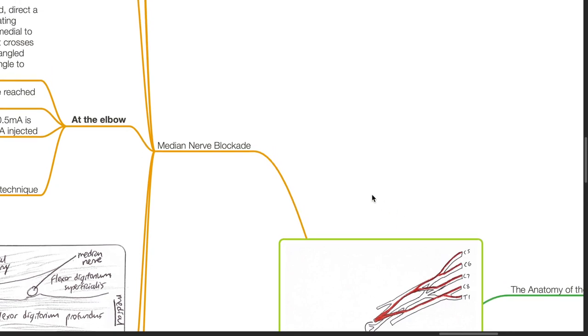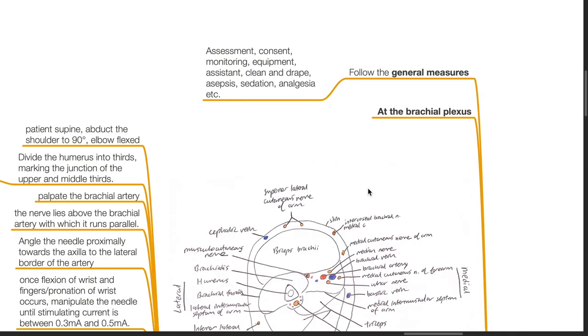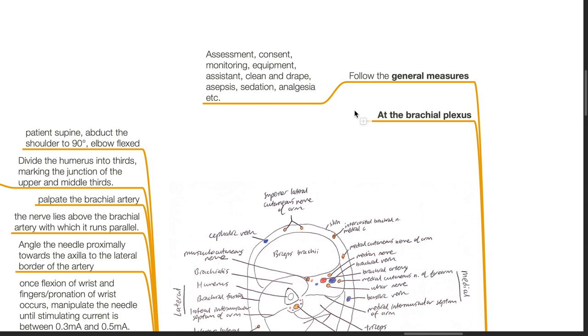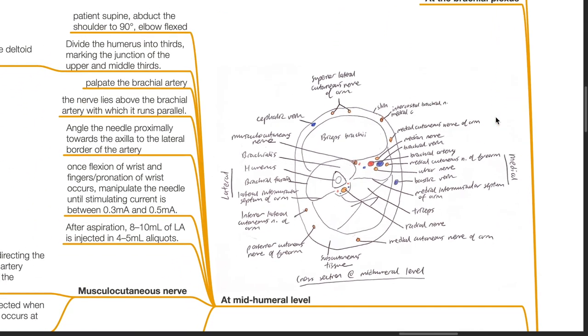Median nerve block. Follow the general measures as detailed in the brachial plexus blocks. The median nerve can be blocked at the brachial plexus level. It can be blocked at the mid-humeral level.